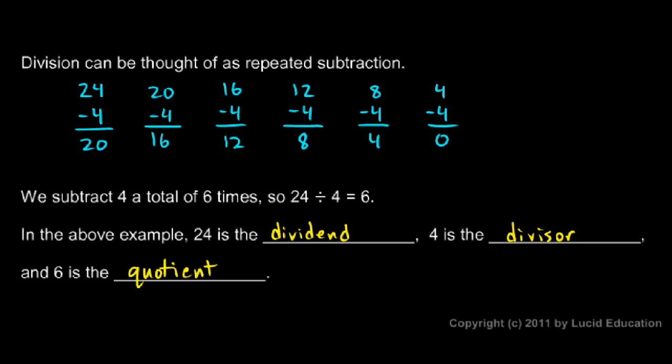Those are mathematical terms you should know: the dividend, the divisor, and the quotient. If you write your division problem as a fraction, 24/4 = 6, the dividend is on top and the divisor is on the bottom, and the quotient is your answer.